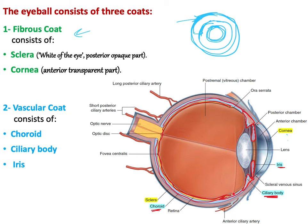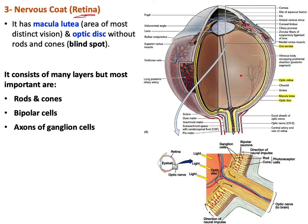The third coat is the retina, also called the nervous coat — the most inner layer of the eye. The retina extends posteriorly and moves anteriorly. It has two parts: an optic part and a non-visual part. The retina has an optic disc where the optic nerve exits, carrying the central retinal artery and veins. Because this area contains no photoreceptors, it is called the blind spot.